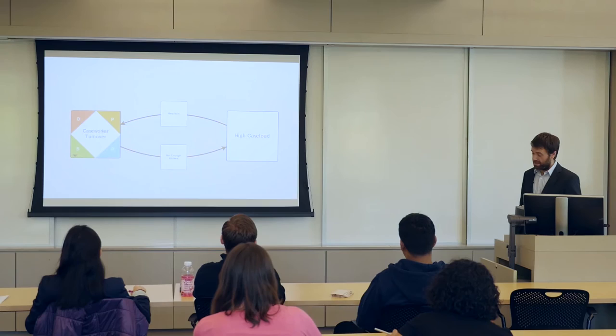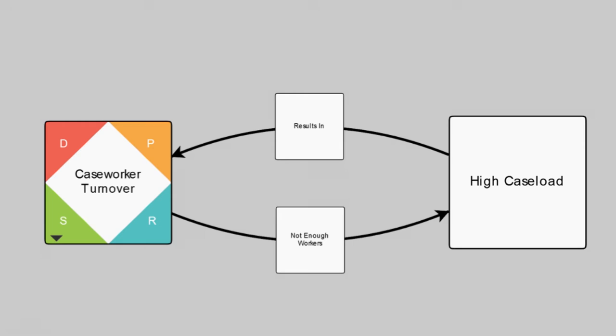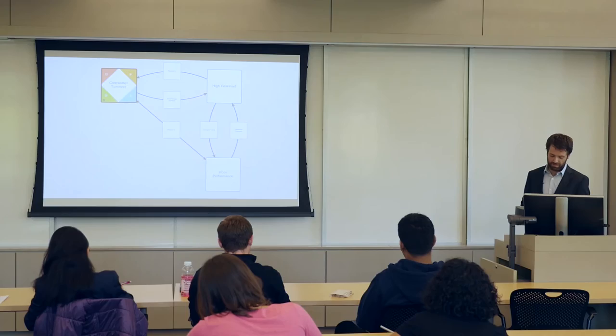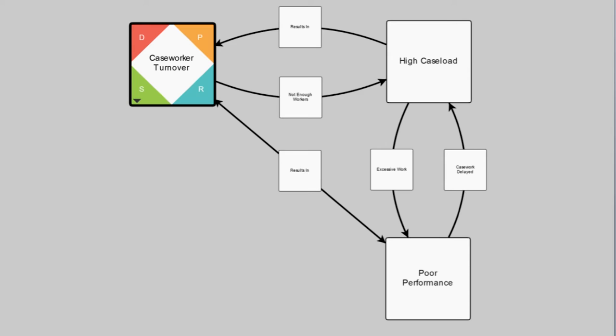Let's look at caseload as an example. It's a feedback loop between caseload and turnover. The more turnover, the higher the caseload, which results in workers becoming frustrated and leaving. So that results in even more turnover. Basically the solution is to reduce caseload, it seems. But the problem is that you can factor in more issues. Poor performance impacts both caseworker turnover and caseload. Caseworkers are discouraged because they're not doing the job as well as they think they could. That results in casework being delayed, it results in larger caseloads, and then it results in more turnover.